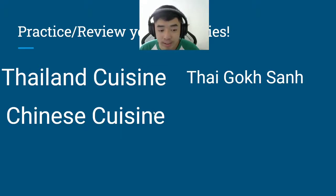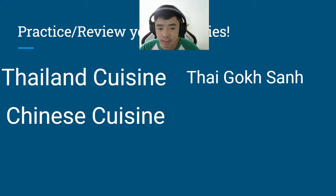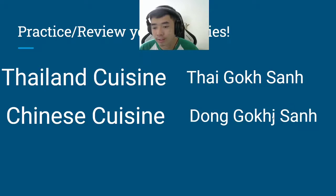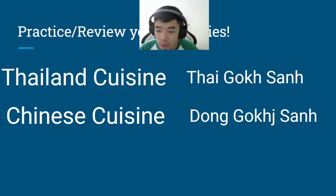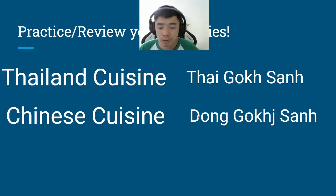And then we have Chinese cuisine. Remember what's Chinese? China is... — forget the J — it's 'Don't cook.' I don't know where that J came from, but it is 'Don't cook San.' So Thailand is 'Thai Kok San,' and Chinese is 'Don't cook San.'